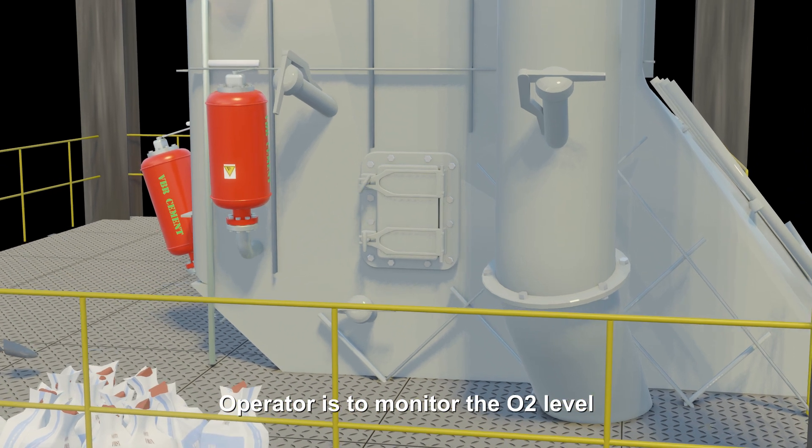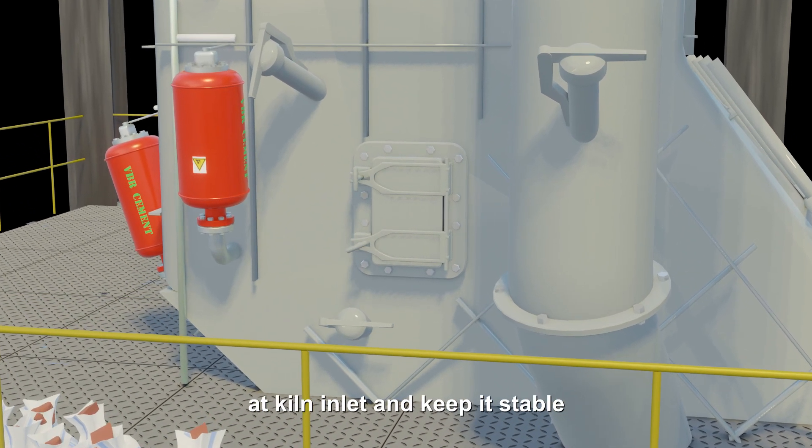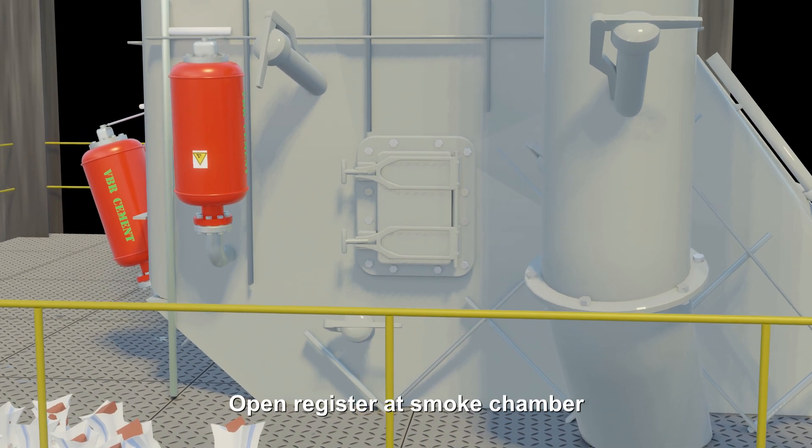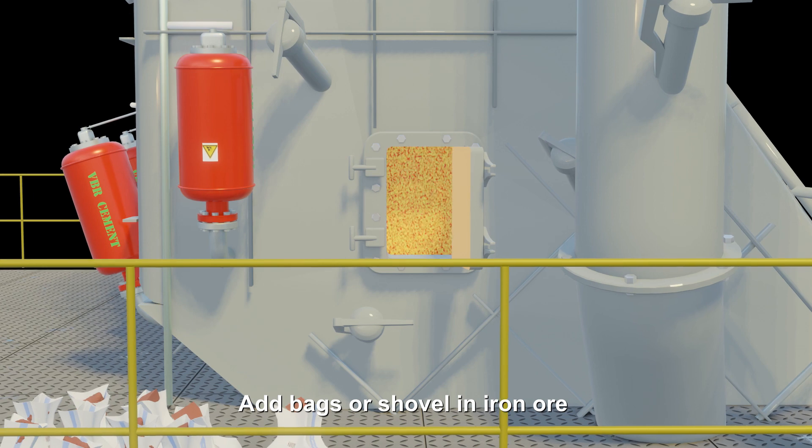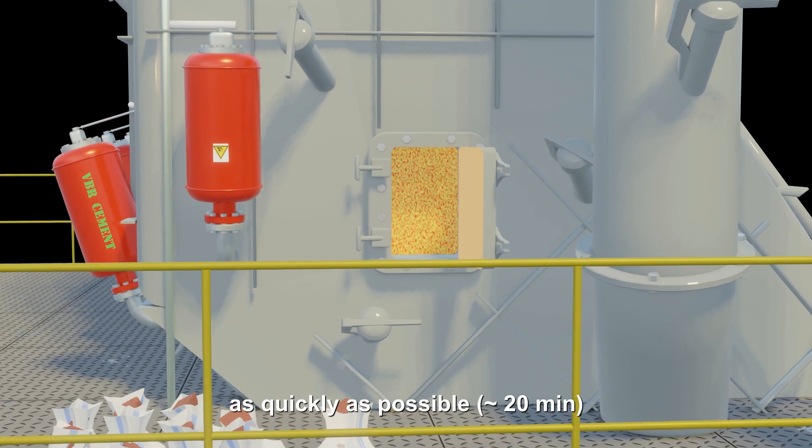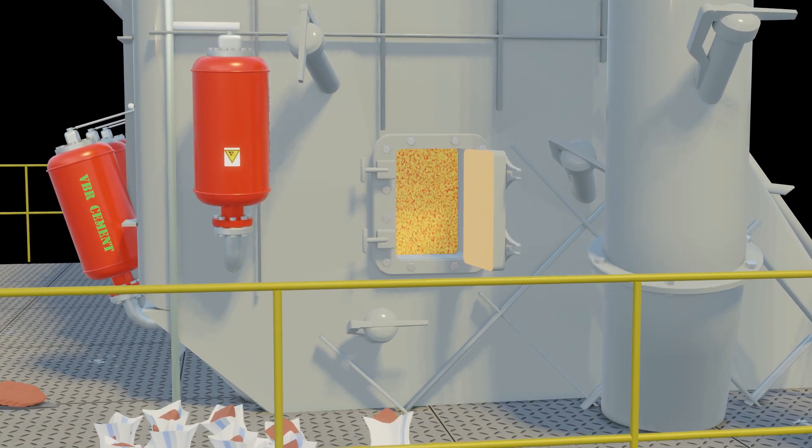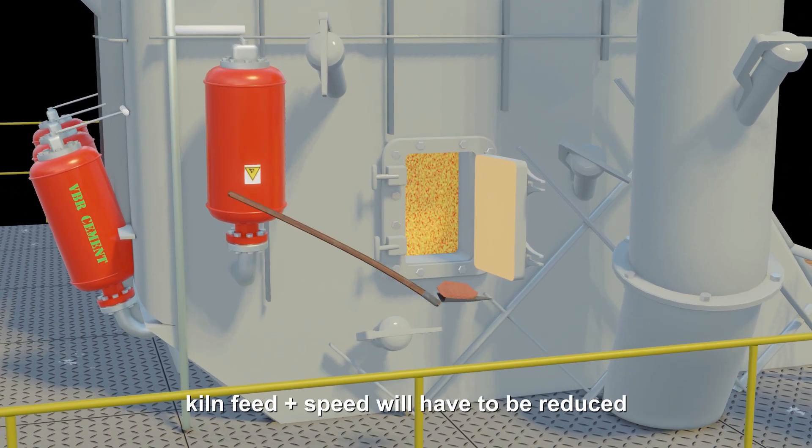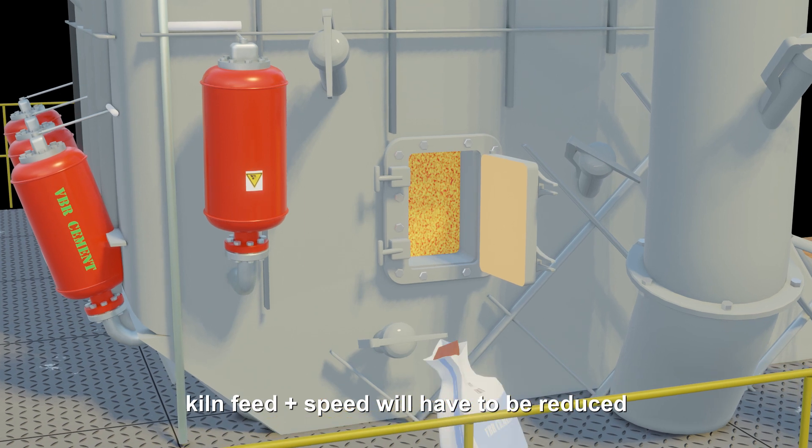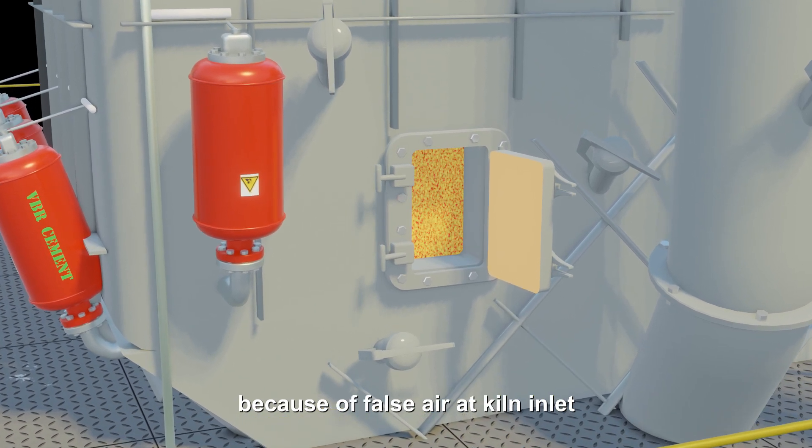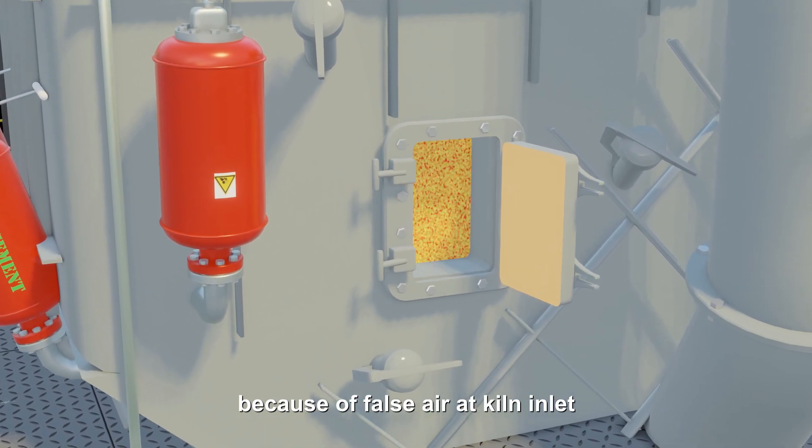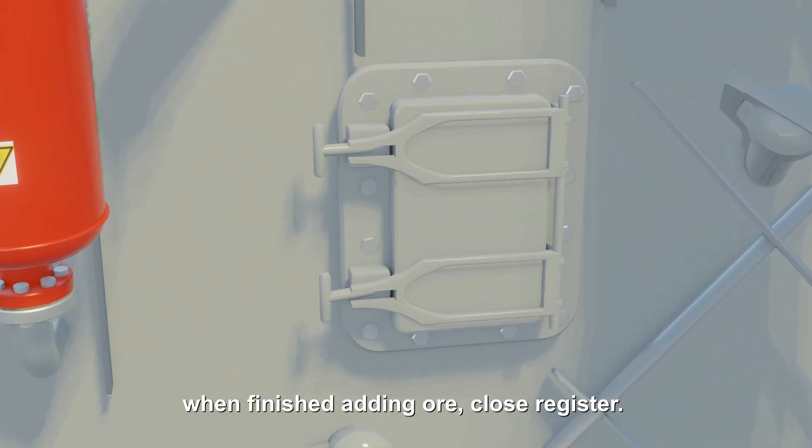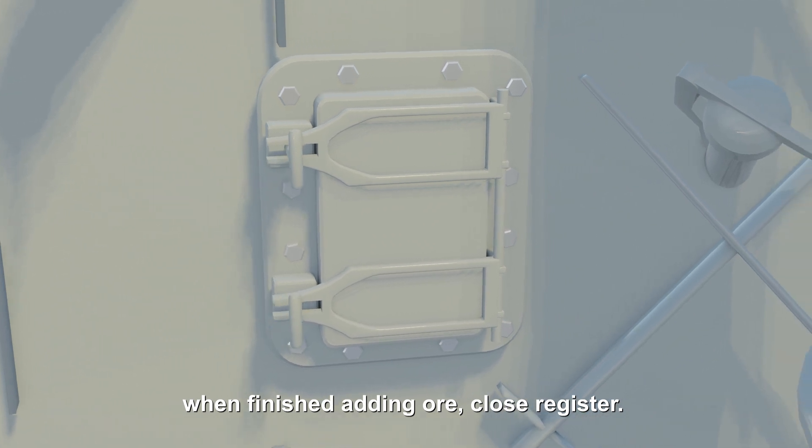Operator is to monitor the kiln inlet and keep it stable. Open register at smoke chamber. Add bags or shovel in iron ore as quickly as possible. Keep an eye on kilowatt of main drive. Kiln feed and speed will have to be reduced because of false air at kiln inlet and system cooling down. When finished adding ore, close register.